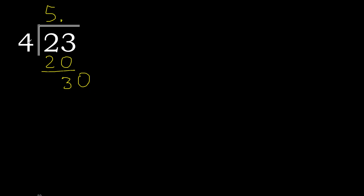Bring down to 30. 4 multiplied by 8 is 32 — it is greater, therefore multiply by 7: 28. 28 is not greater. Subtract: remainder is 2.